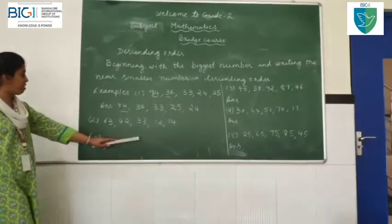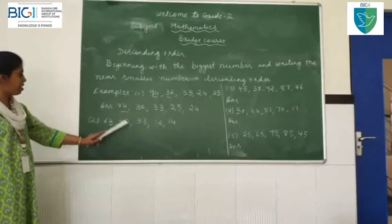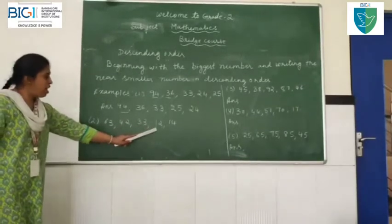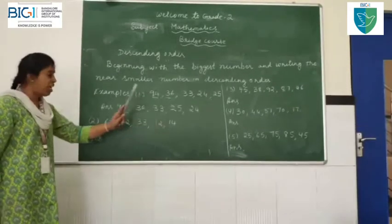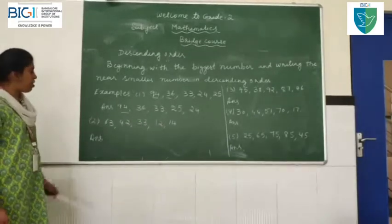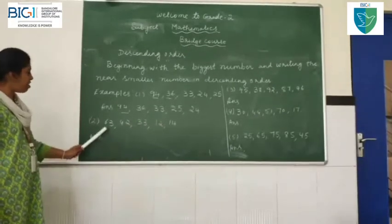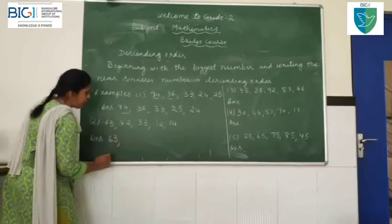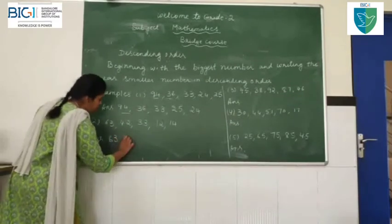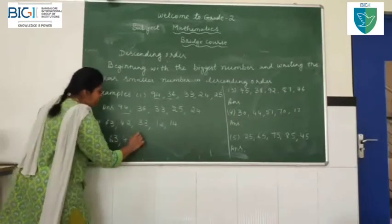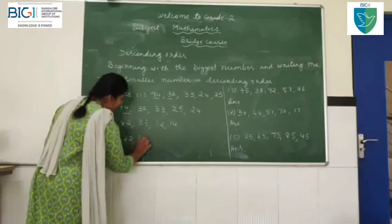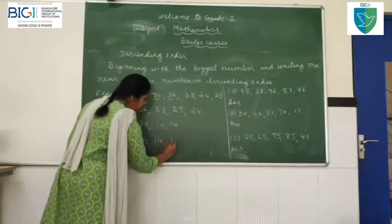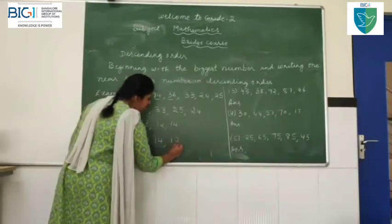Let me give you the second example: 63, 42, 33, 12, 14. Now, which is your first biggest number? 63. Next, which is the biggest number? 42. Next, 33. The next biggest number is 14. Next biggest number is 12.